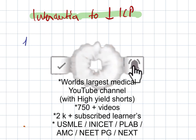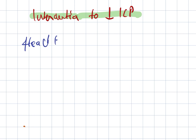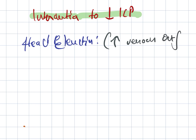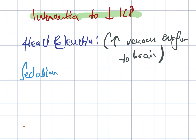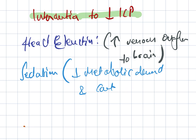The first intervention to lower ICP is the head elevation technique, which increases venous outflow to the brain. Next, sedation can be used, as it decreases metabolic demand and controls hypertension.